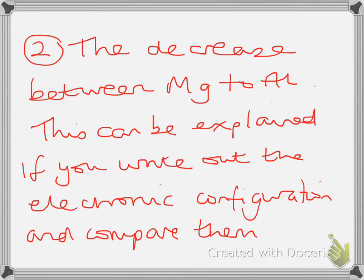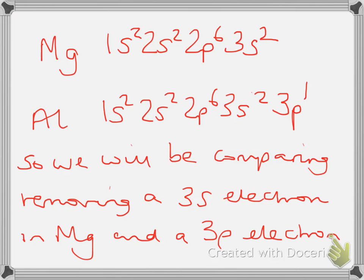Then the next thing we need to have a look at is the decrease between magnesium and aluminium because aluminium has a value that's lower than would be expected by the trend. This can be explained if you write out the electronic configuration of the two elements. So for magnesium we've got 1s2, 2s2, 2p6, 3s2. For aluminium we've got 1s2, 2s2, 2p6, 3s2, 3p1. So we'll be comparing removing a 3s electron in magnesium and a 3p electron in aluminium.